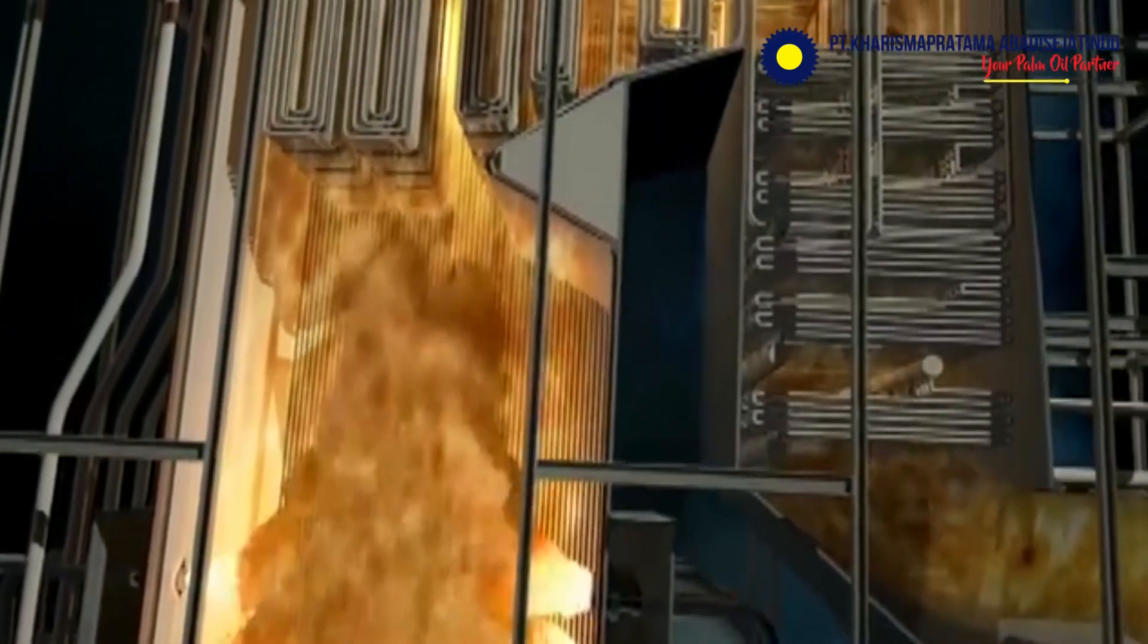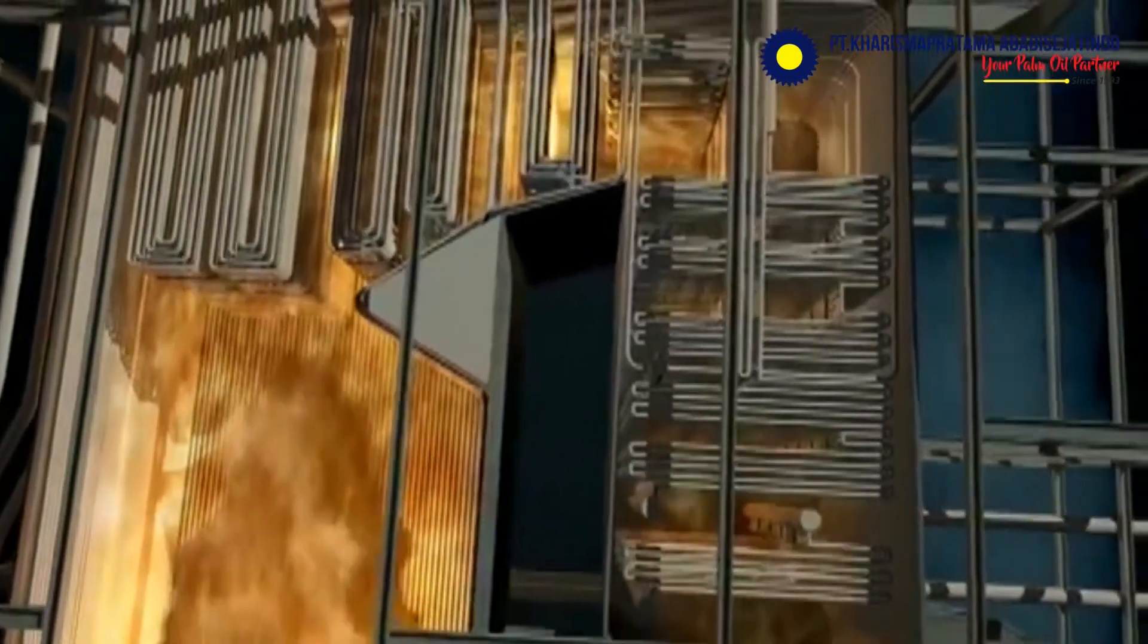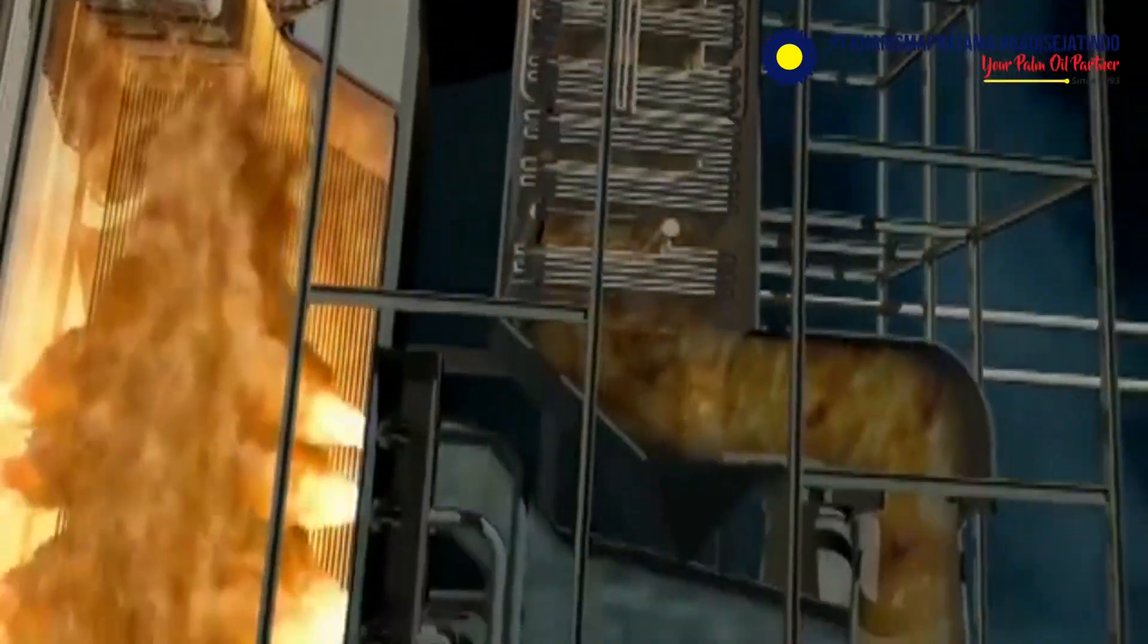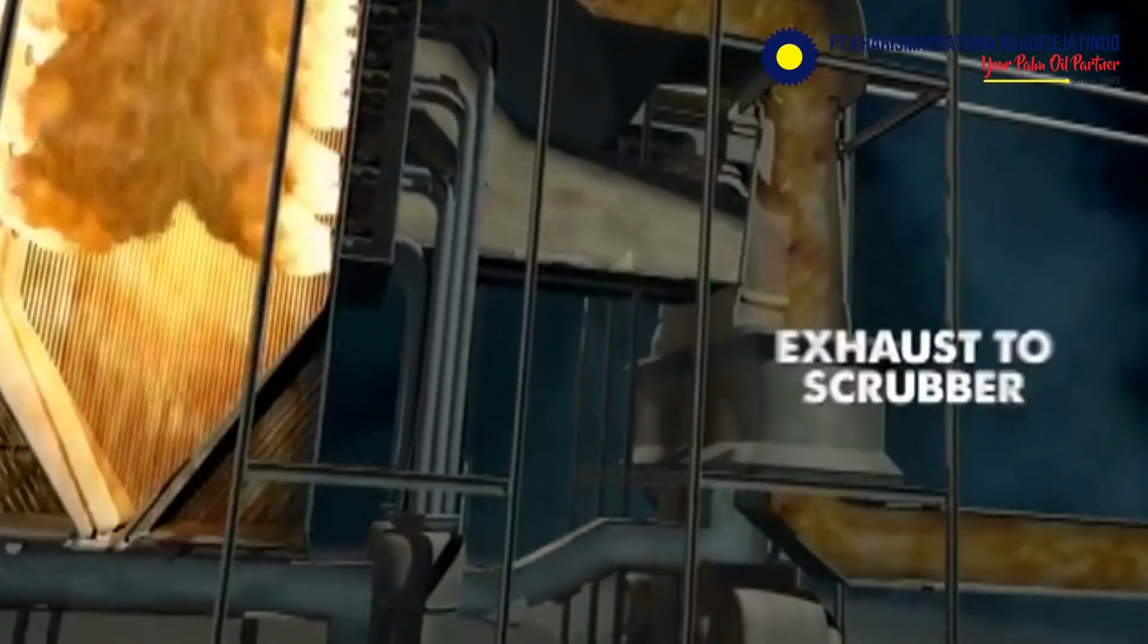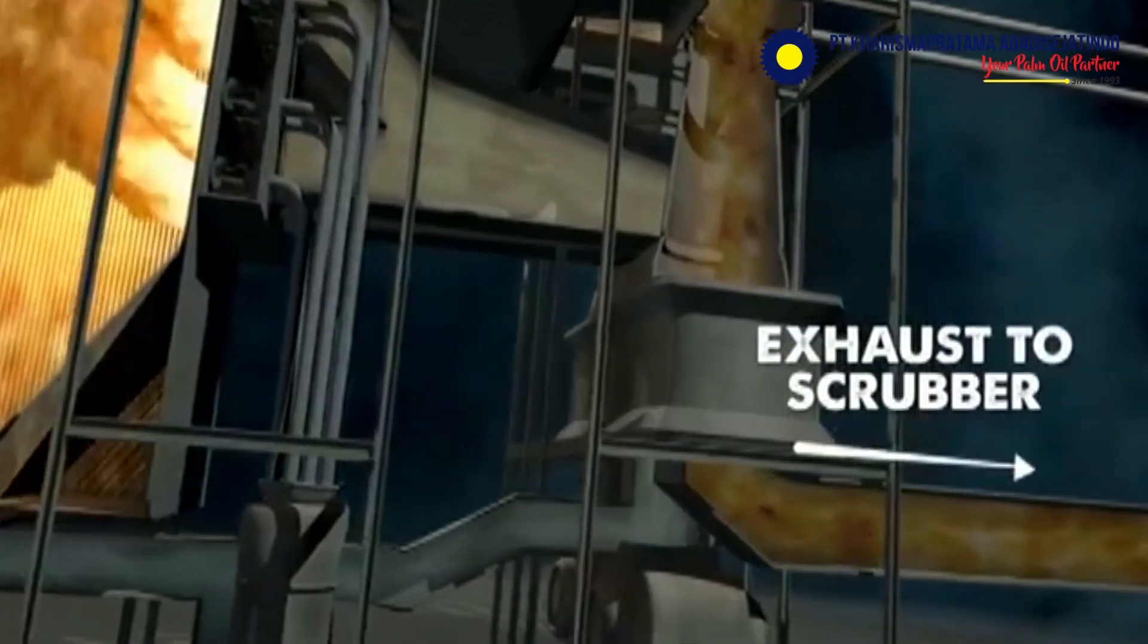The hot gases flow upward, heating the rest of the system through convection, before passing through the air preheater, and ultimately flow into the scrubber, where pollutants are removed.